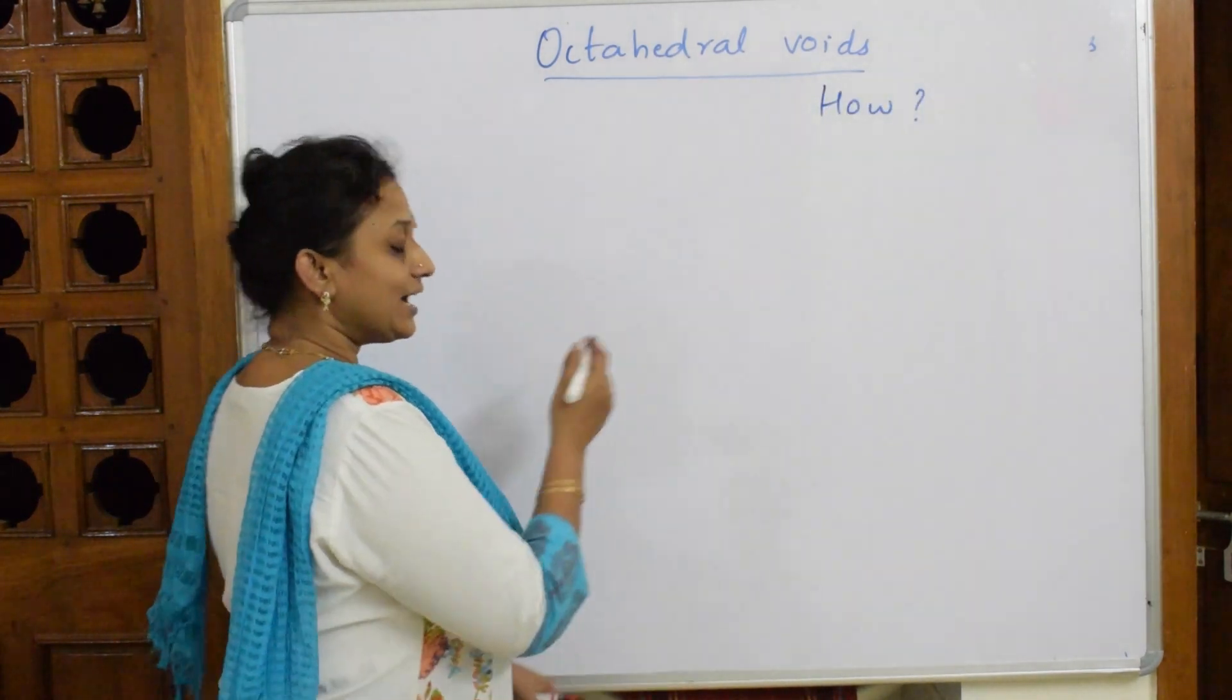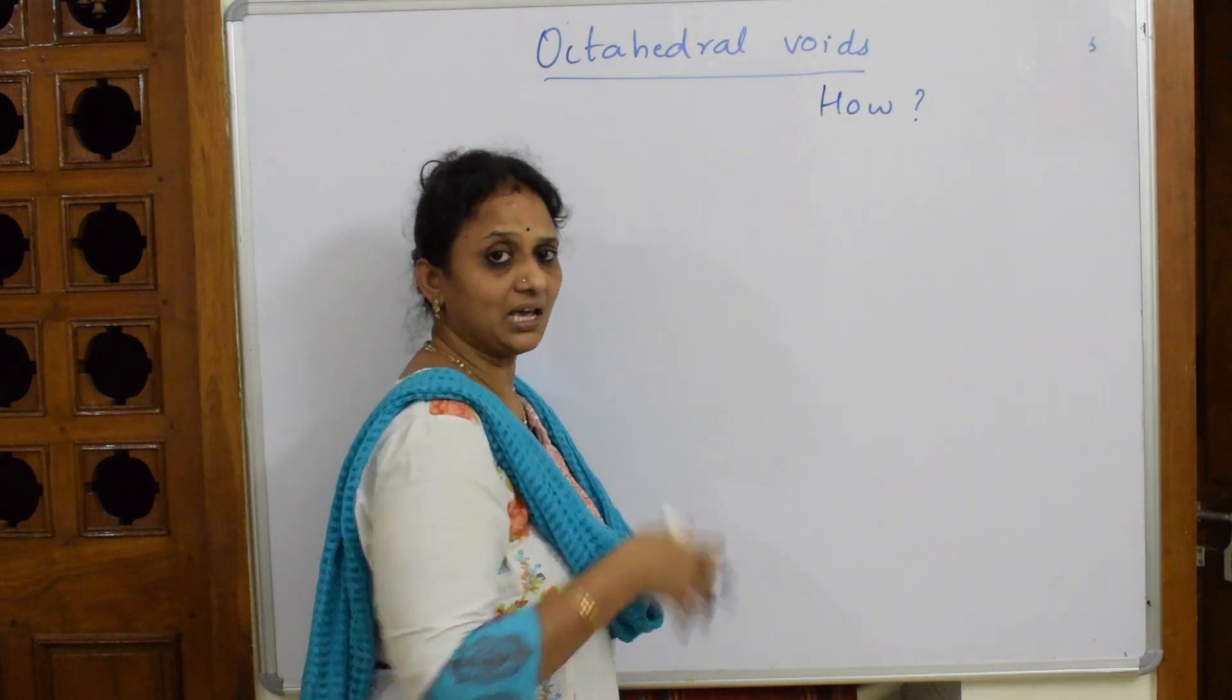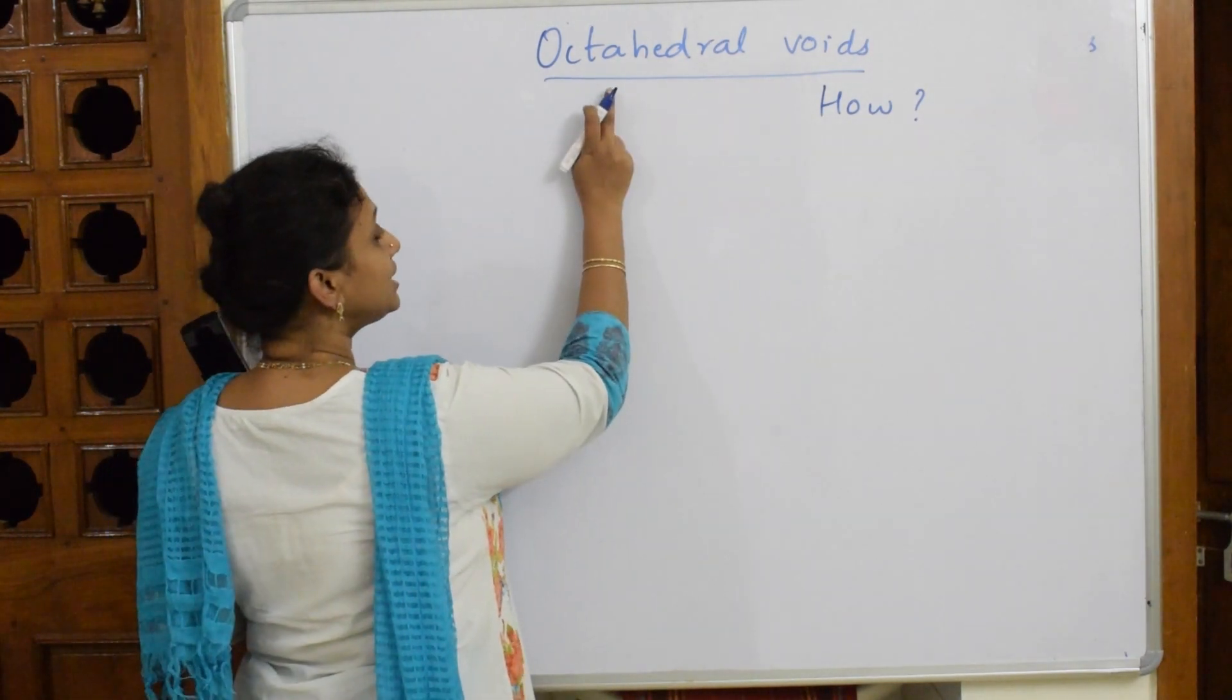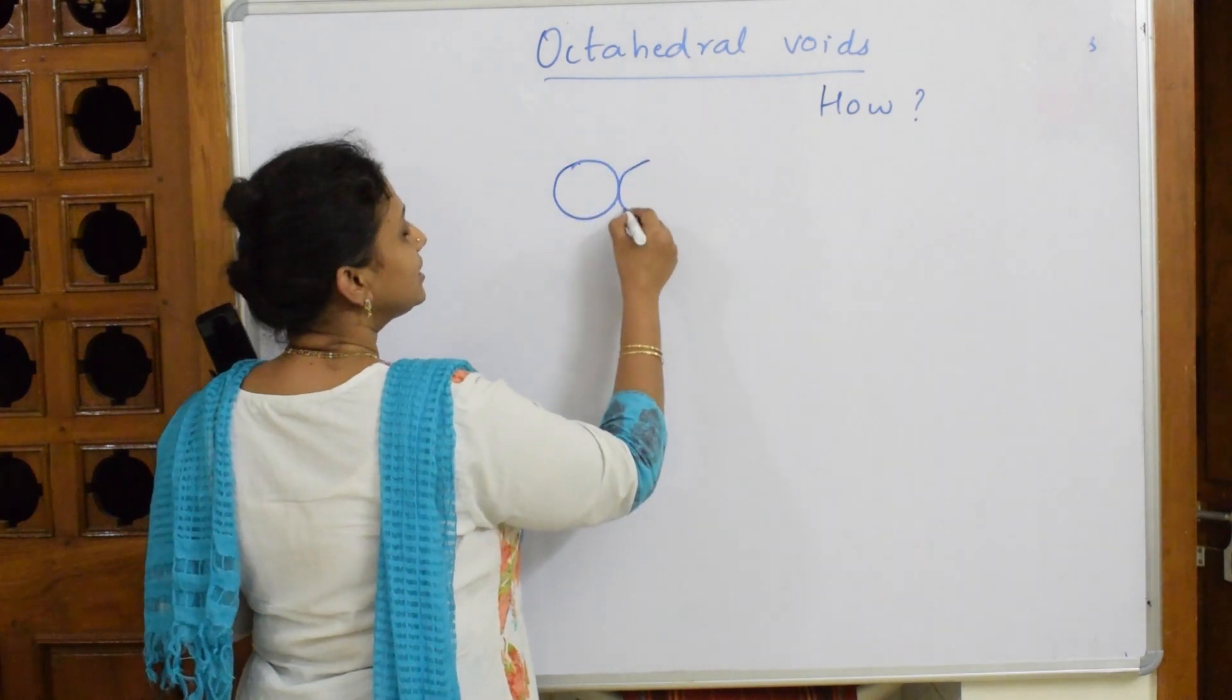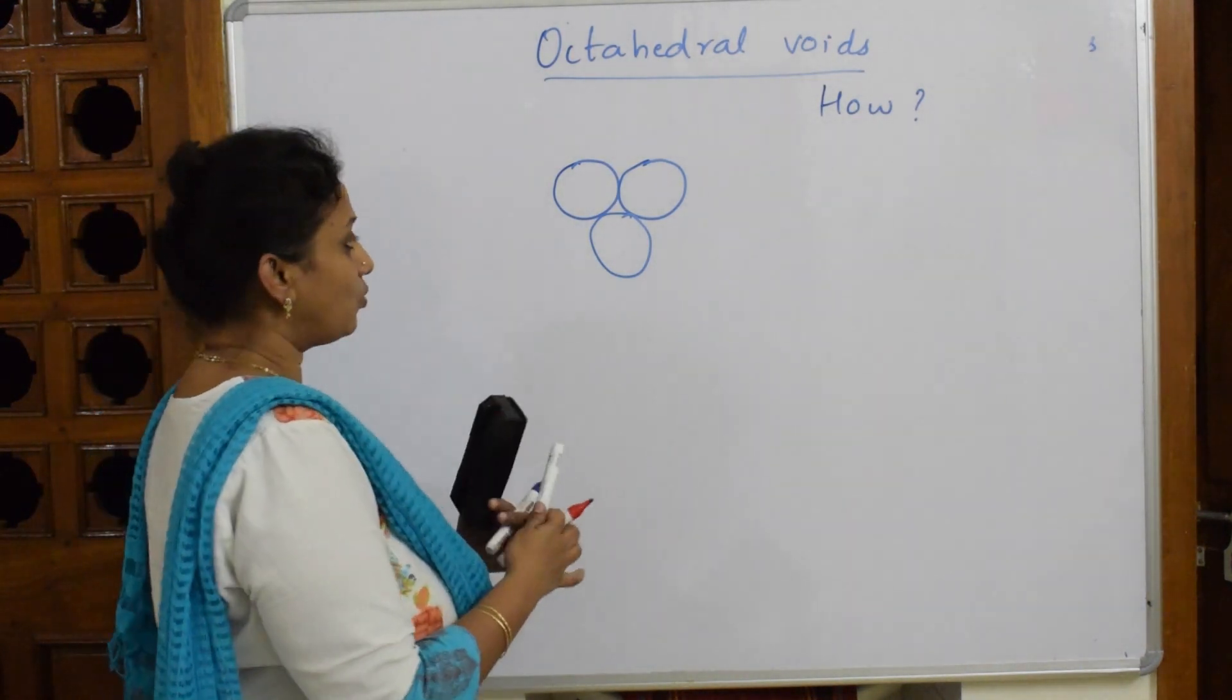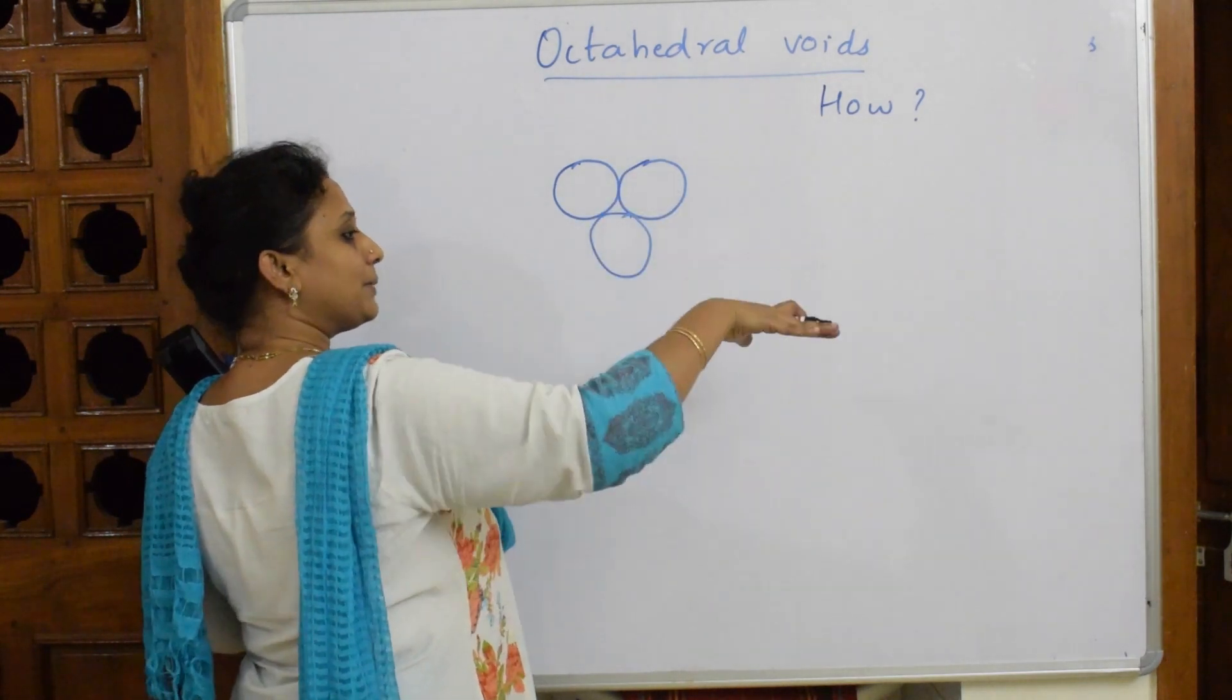I have already taught in the previous video AB packing and ABC packing. Now for an octahedral void to form, first you're packing one layer here, one more layer, and one more atom. Then you are going to place one more layer. This is the first layer, the base layer. On the top I'm going to place one more layer.